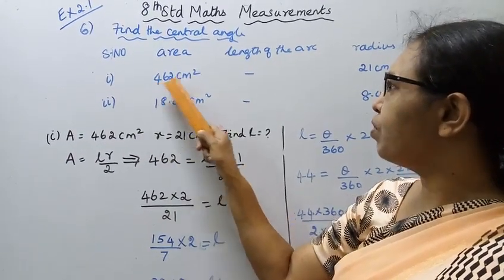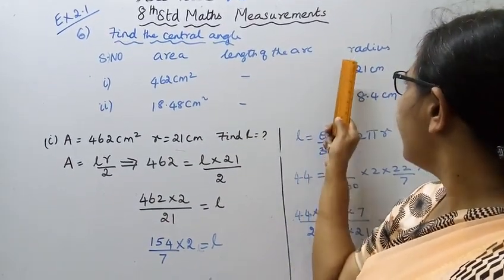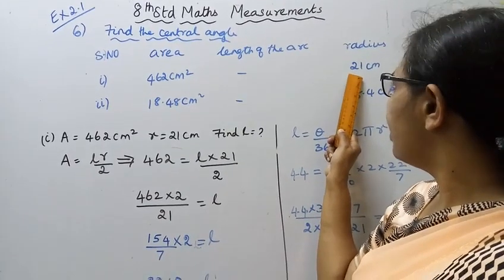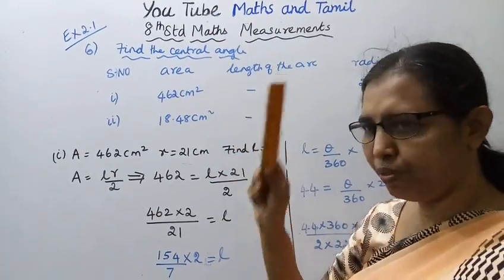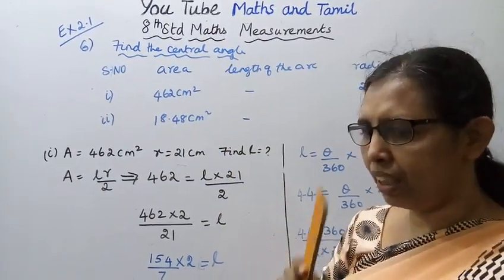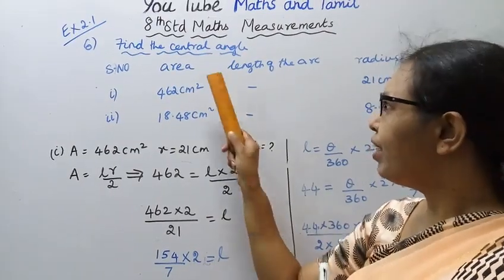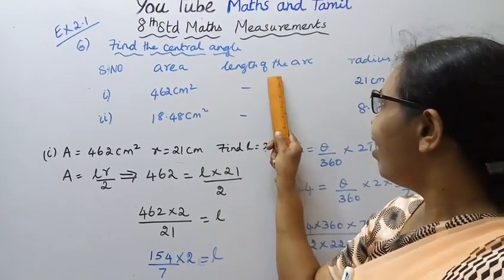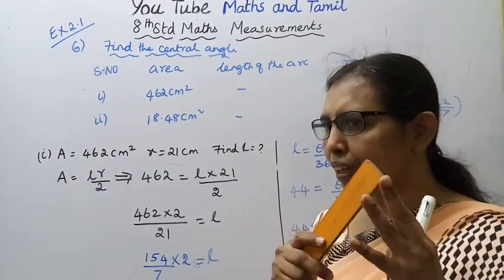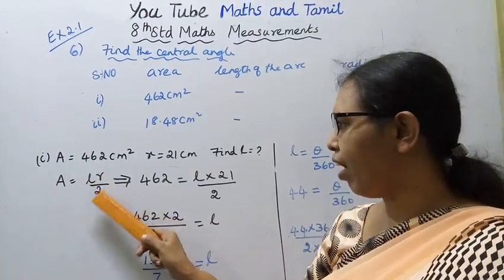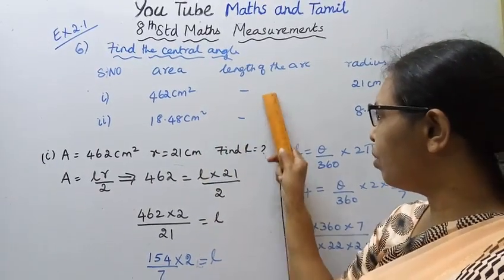For the first subdivision, the area is 462 centimeters square, the length of the arc is unknown, and the radius is 21 centimeters. We need to find the central angle. The formula we use is: Area equals L times R divided by 2.